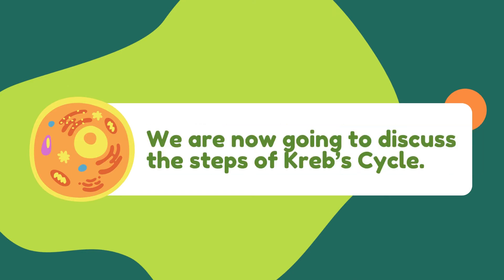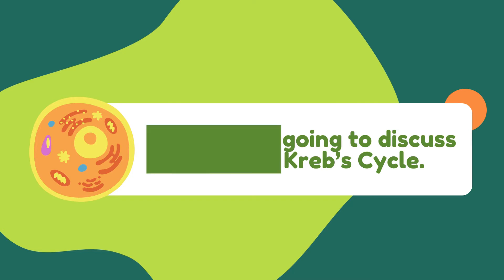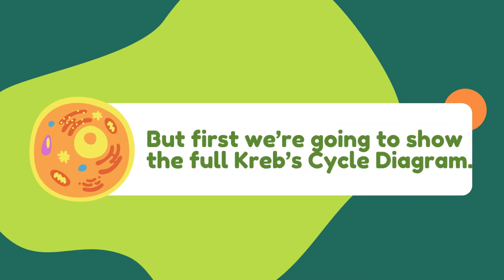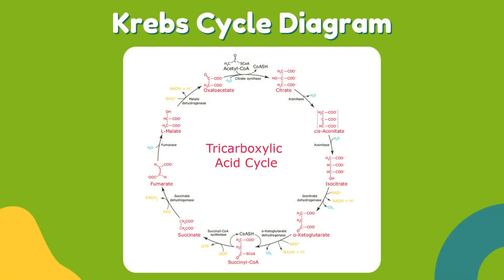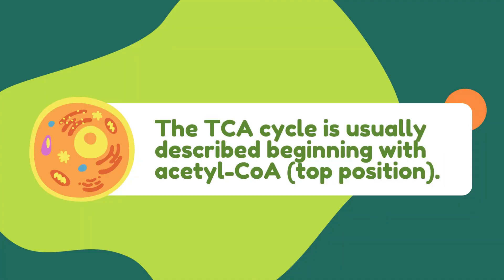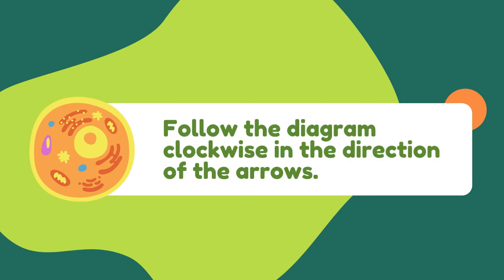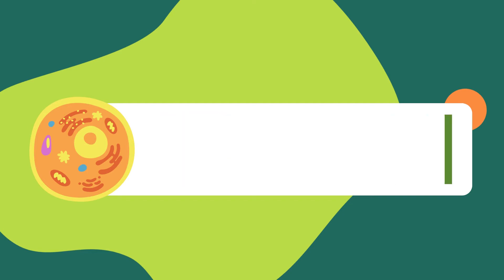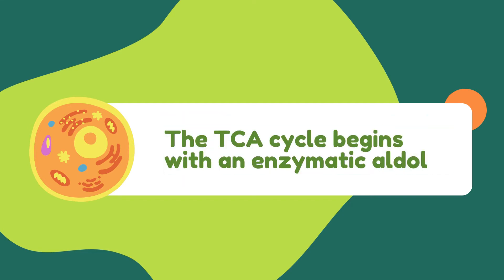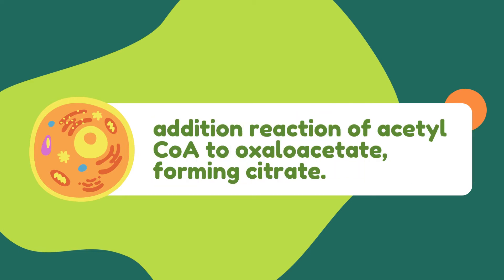We are now going to discuss the steps of the Krebs cycle. First, we're going to show the full Krebs cycle diagram. The TCA cycle is usually described beginning with acetyl-CoA. Follow the diagram clockwise in the direction of the arrows. The TCA cycle begins with an enzymatic aldol addition reaction of acetyl-CoA to oxaloacetate, forming citrate.